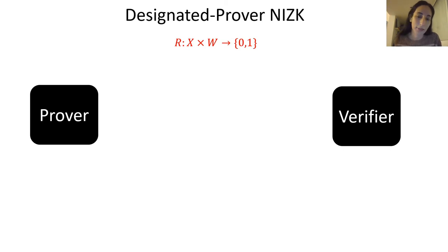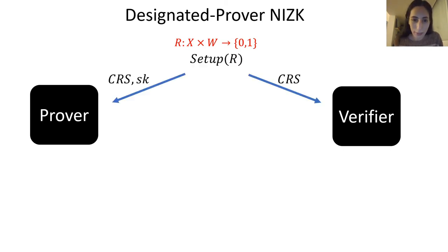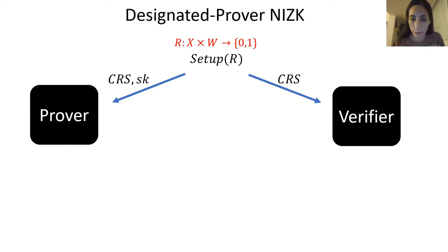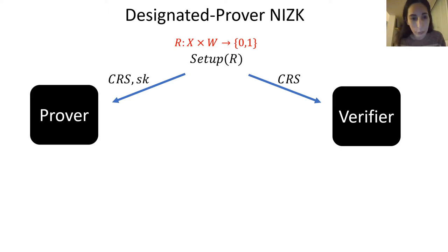The syntax is as follows. There is a setup algorithm that takes the relation R and generates two values. The first value is a common reference string, a CRS, accessible to both the prover and the verifier. The second value is a secret key, and we have this additional value because we are in a designated prover model, so this secret key is designated for the prover.